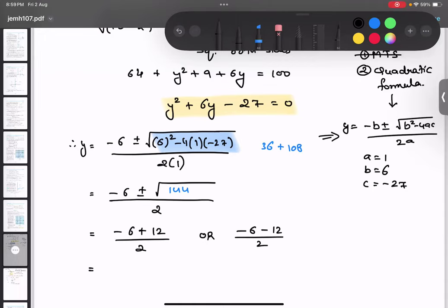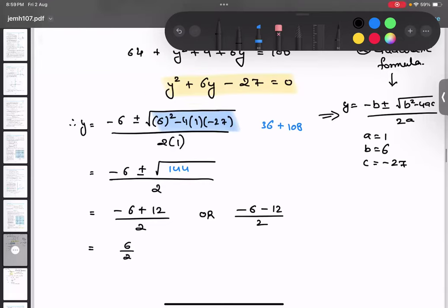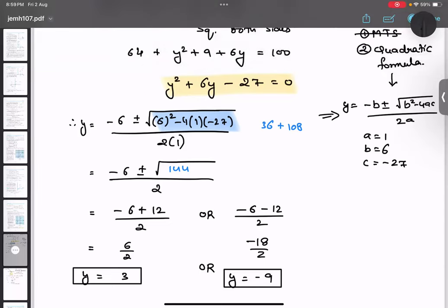So minus 6. Now I am going to take plus and minus separately. Plus, 144 square root is 12. Or minus 6 minus 12 upon 2. So minus 6 plus 12 will give me 6 upon 2, that will be 3. So y value is 3. Or minus 18 by 2, y value is minus 9.